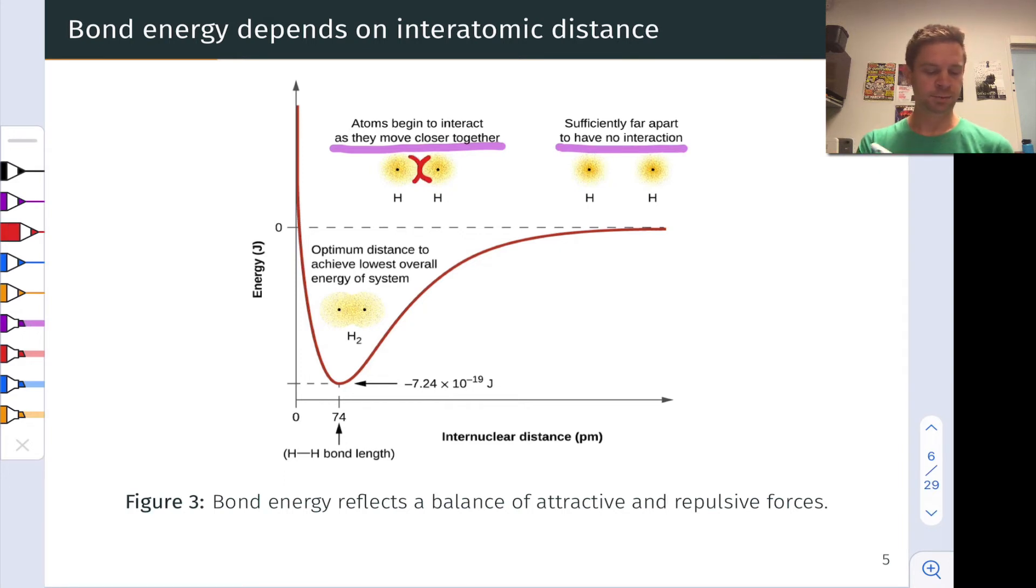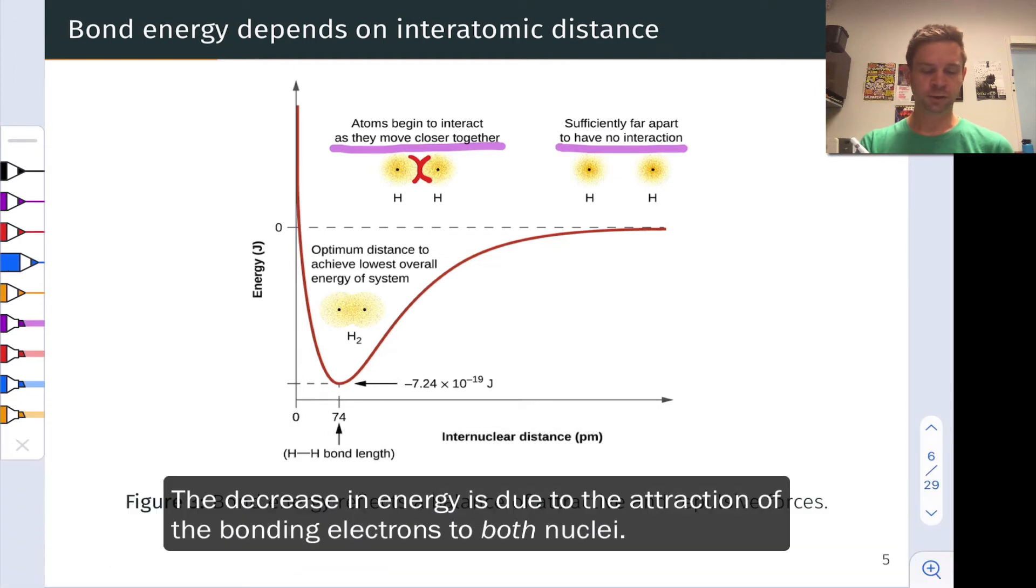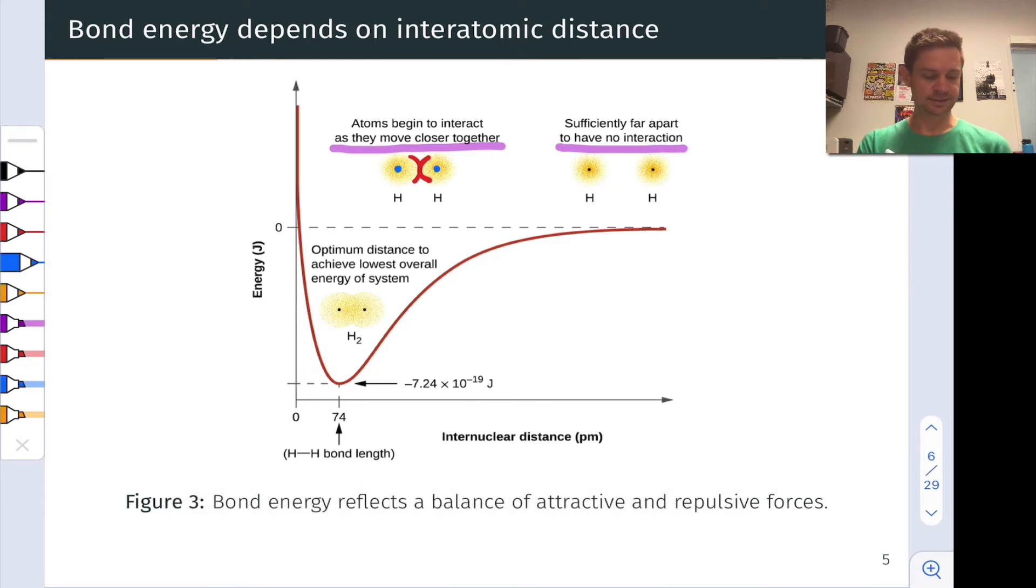So there's electrostatic attraction going on there along with the orbital overlap. We reach a point where that's sort of the ideal distance between the nuclei for that attraction of the electrons to both nuclei.